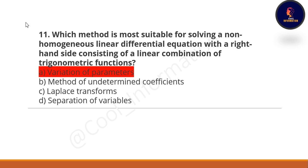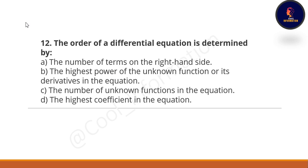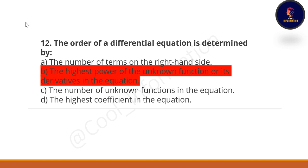Next question: the order of a differential equation is determined by what? Option A is the number of terms on the right hand side. The correct option is option B — the highest power of the unknown function or its derivatives in the equation.